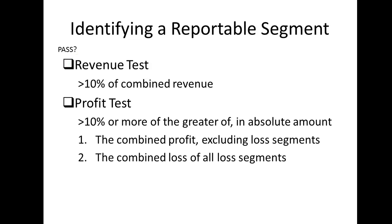The second test is the profit test. Here you add up all the segments with profits, and then separately add up all the segments with losses. The higher of these two numbers in absolute terms is used to calculate the threshold using a 10% factor, the same as before. Any operating segments with either a profit or absolute loss in excess of the threshold become a reportable segment.